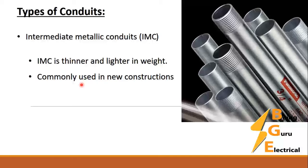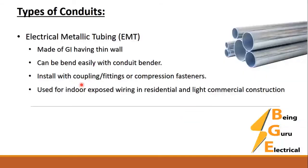The third type is Electrical Metallic Tubing, or EMT. It is made of galvanized steel with thin walls, so it can be bent easily with a conduit bender. It does not have threads and is installed with couplings, fittings, or compression fasteners. It is used for indoor exposed wiring in residential and light commercial construction buildings.